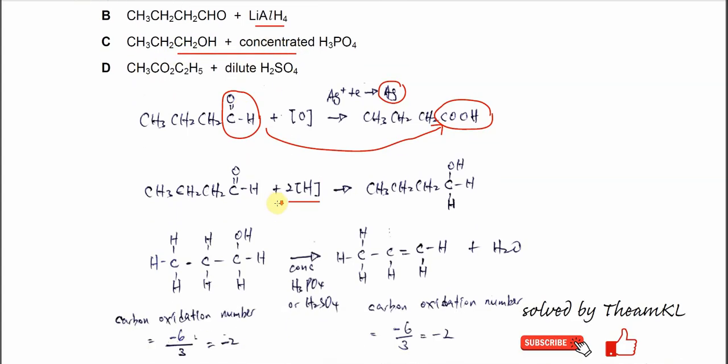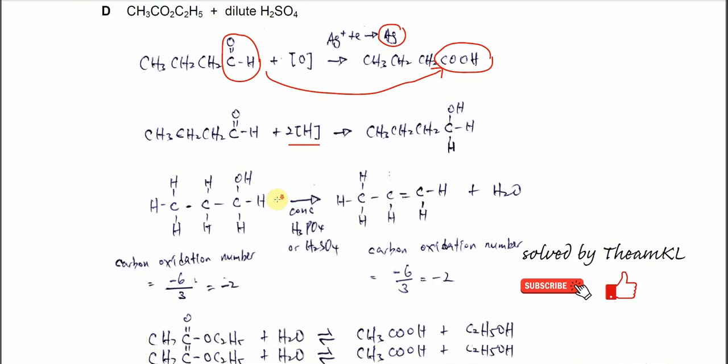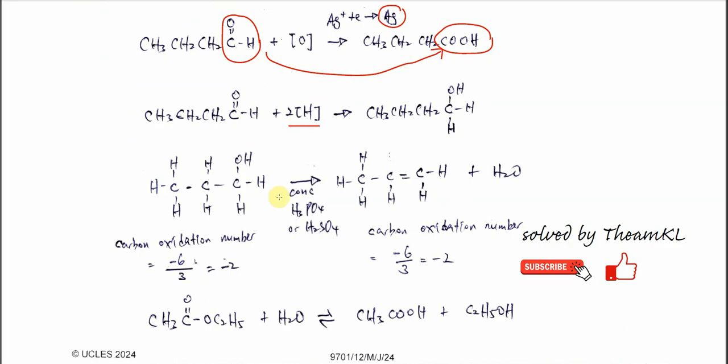For C, this is actually dehydration. When there is dehydration, don't think that there is a redox reaction just because H2O is removed. Let's check the oxidation numbers of the carbon before and after the reaction. Before dehydration, the carbon oxidation number is negative 6 over 3.